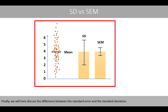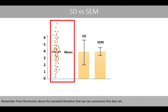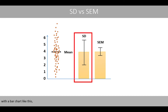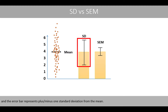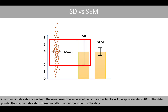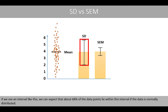Finally, we will discuss the difference between the standard error and the standard deviation. Remember that we can summarize a data set with a bar chart where the height of the bar represents the mean of the data points, and the error bar represents plus or minus one standard deviation from the mean. One standard deviation away from the mean results in an interval which is expected to include approximately 68% of the data points. The standard deviation therefore tells us about the spread of the data. If we see an interval like this, we can expect that about 68% of the data points lie within this interval if the data is normally distributed.